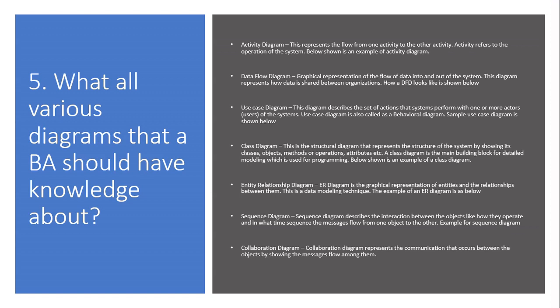Question 5: What are the various diagrams that a BA should have knowledge about? Activity diagram — represents the flow from one activity to another; activity refers to the operation of the system. Data flow diagram — a graphical representation of the flow of data into and out of the system, showing how data is shared between organizations. Use case diagram — describes the set of actions that systems perform with one or more actors (users); also called a behavioral diagram. Class diagram — a structural diagram that represents the structure of the system by showing its classes, objects, methods or operations, and attributes. It is the main building block for detailed modeling used in programming.